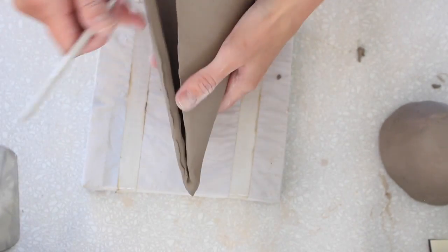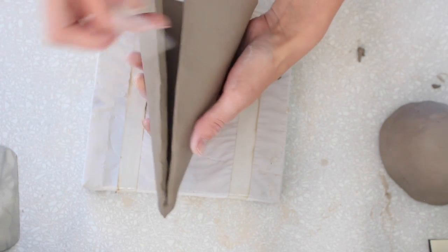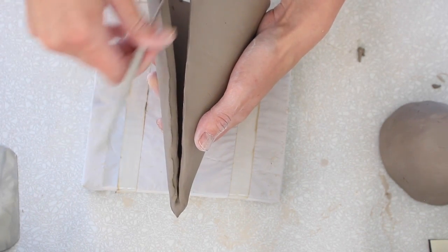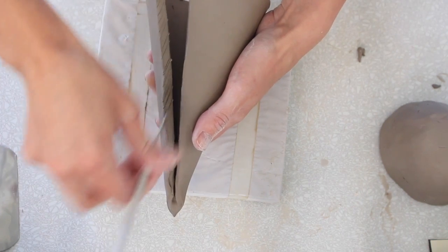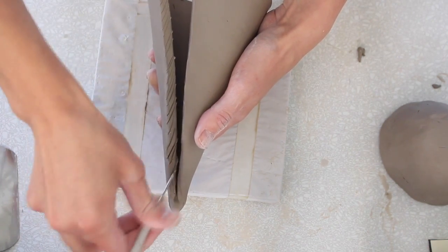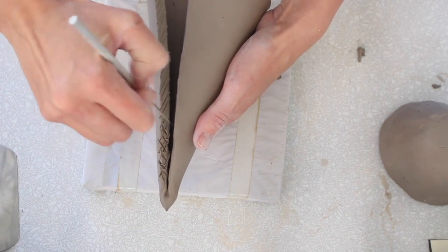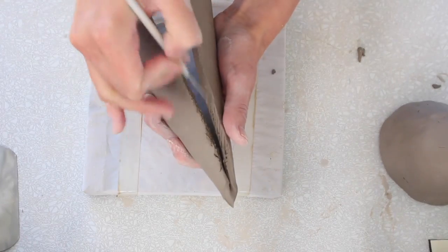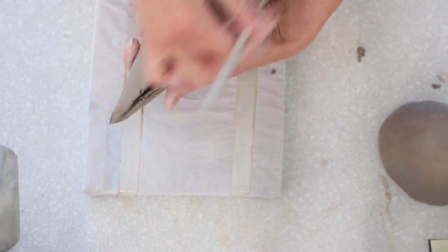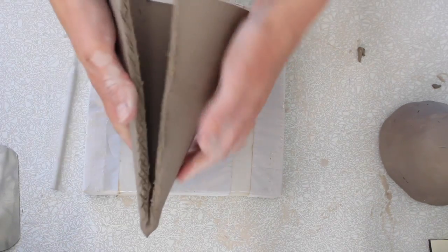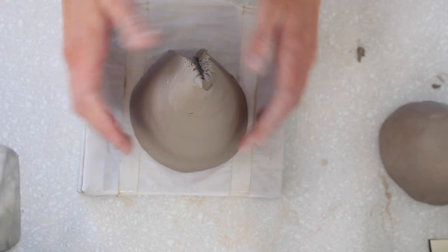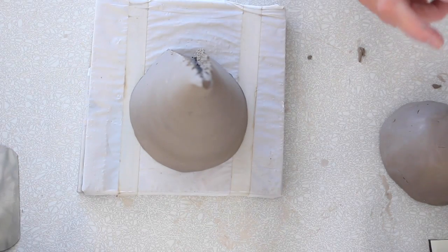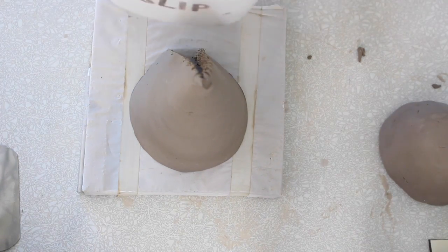I need to slip and score these pieces together. So remember, I can just score by making marks in two different directions or kind of little crosses across your piece. So I've scored both sides. What I need to do is use some slip. Remember you want your slip to be about the consistency of chocolate milk.